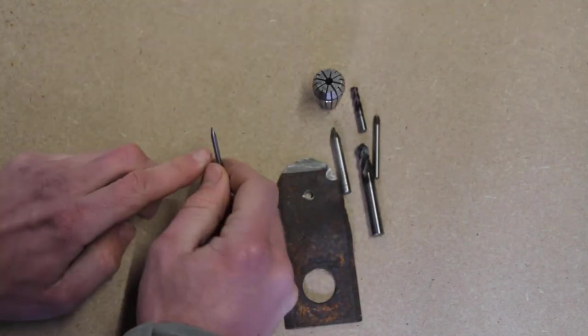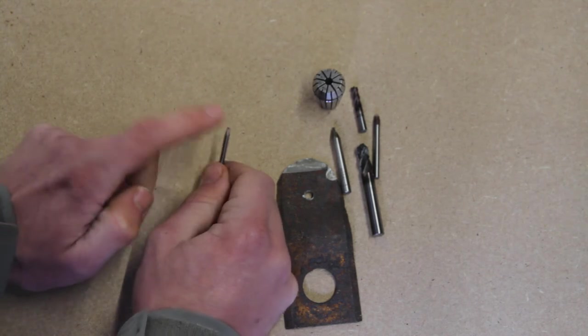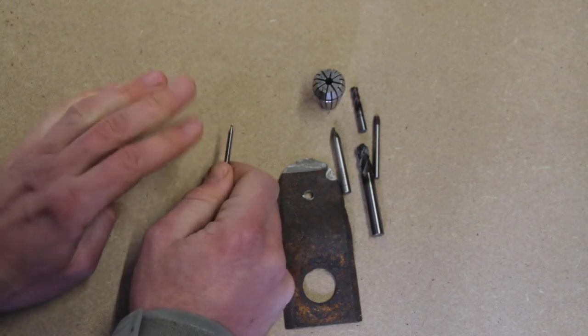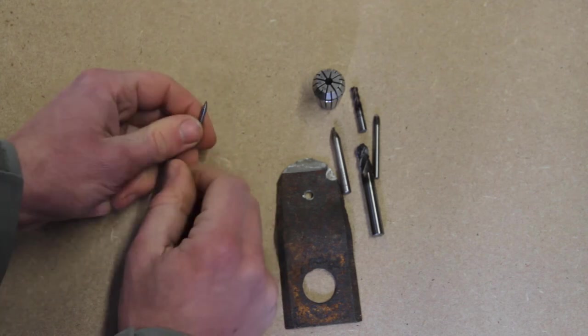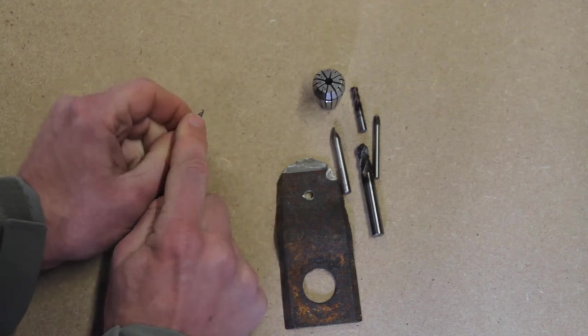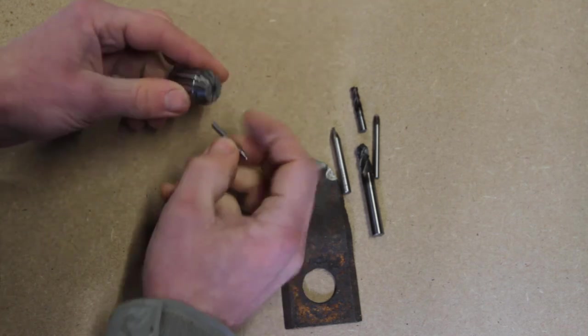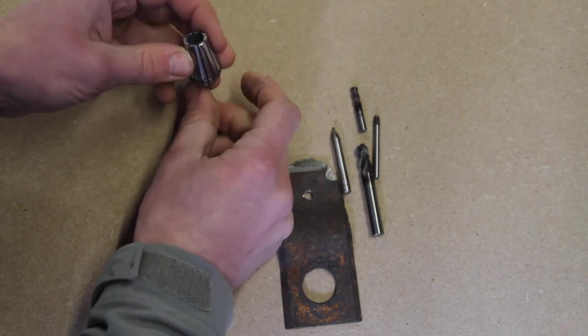And then for the last one, this is a one millimeter end mill and I already broke three of them. The first one I broke, it's when it's sitting in the collet upside down.